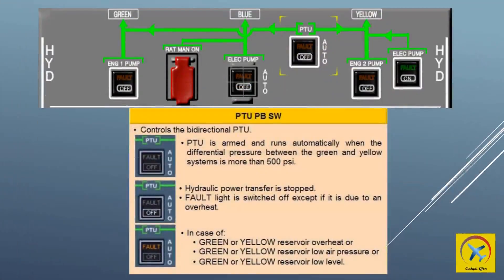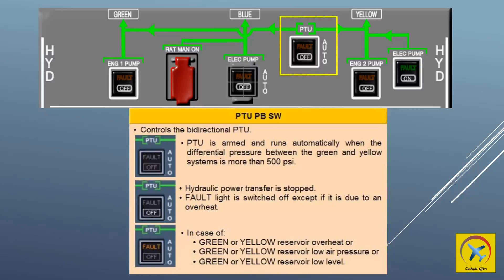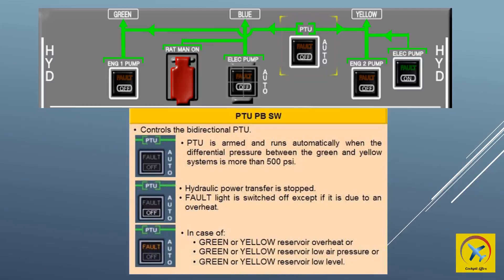PTU auto mode: the reversible motor pump is armed when both yellow and green electro-hydraulic valves are open. The PTU runs automatically when the differential pressure between the green and yellow systems is more than 500 psi, except when inhibited. The PTU is inhibited when the park brake is on and only one ENG master switch is on, the nose wheel steering disconnect pin is installed and only one ENG master switch is on, the PTU switch is off, or the cargo doors are being operated — inhibition continues for approximately 40 seconds.